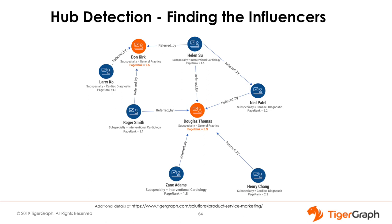The next capability is hub and community detection. Let's consider the healthcare example, where we saw how referral networks among doctors are built out by correlating claims. After establishing referral relationships among influencers or trusted product providers, the next step involves identifying the most influential hubs driving the most activities — such as healthcare claims for a specific condition like cardiac care or diabetes management. With a graph, we can find which entities have the most connections more efficiently than with a tabular database. We can also use a more sophisticated measure of importance, such as the well-known graph algorithm PageRank, which is compute intensive and only a native parallel graph can handle at scale. Consider the example where Dr. Douglas Thomas, the general practitioner, is driving referrals for cardiac care to three surgeons — Dr. Helen Hsu, Dr. Rick Summers, Dr. Zane Adams — and two cardiologists, Dr. Henry Chang and Dr. Neil Patel.